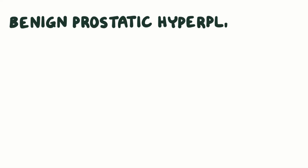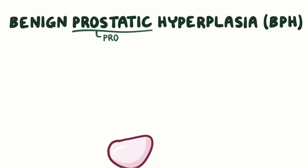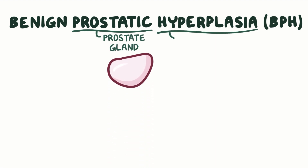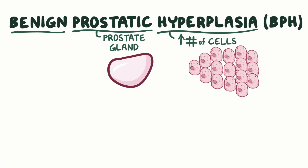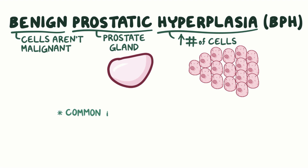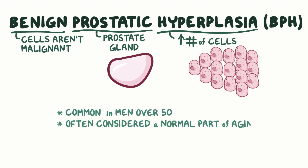In benign prostatic hyperplasia, or BPH, prostatic refers to the prostate gland. Hyperplasia means an increase in the number of cells, and benign means that these cells aren't malignant, so they don't invade neighboring tissues. Basically, benign prostatic hyperplasia is the non-cancerous growth of the prostate gland. This condition is common in men over 50, and it's often considered a normal part of aging.